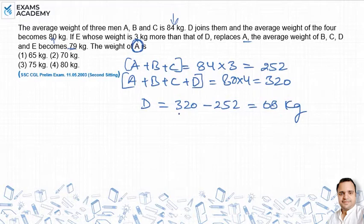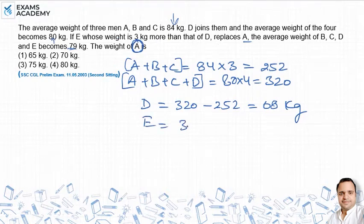D का weight आ गया 68 kg. आगे question में क्या कहता है कि E जो है उसका weight 3 kg more है D से. इसका मतलब E का weight हो जाएगा 3 plus 68, that is equal to 71 kg.